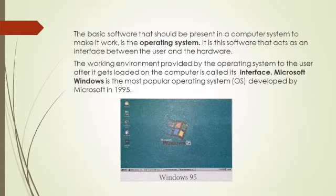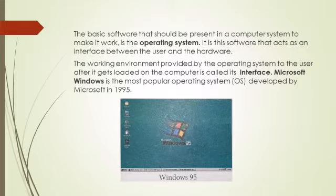As you know, an operating system coordinates between the user and the computer. The basic software that should be present in a computer system to make it work is the operating system. It is this software that acts as an interface between the user and the hardware. The working environment provided by the operating system to the user after it gets loaded on the computer is called its interface. For example, the Graphical User Interface present in Windows 7.